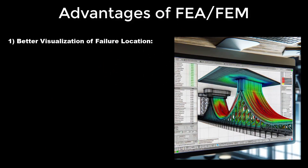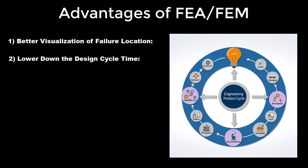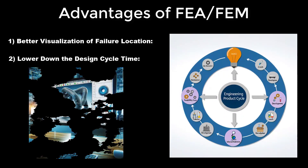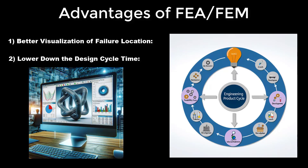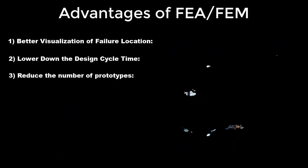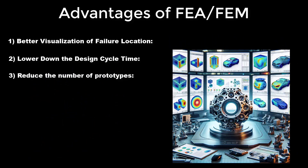Let's highlight the five key advantages of using FEA or FEM in engineering. First, better visualization of failure location — FEA allows engineers to precisely determine where a structure might fail, enabling targeted improvements. Second, lower design cycle time — by simulating and testing designs virtually, FEA significantly reduces the need for multiple design iterations, speeding up the development process. Third, decrease the number of prototypes — with accurate simulations, the number of physical prototypes needed is greatly reduced, saving time and resources.